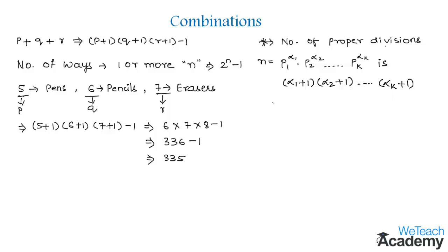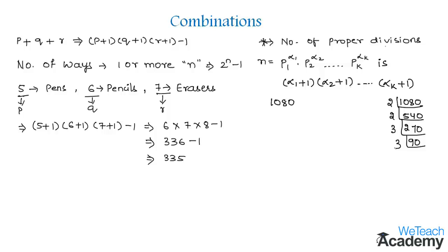Let us find the number of positive divisors of 1080. We perform the prime factorization: 2 times 540 is 1080, 2 times 270 is 540, 2 times 135 is 270, 3 times 45 is 135, 3 times 15 is 45, 3 times 5 is 15, and 5 times 2 is 10. So we get the prime factors as 2 to the power 3, 3 to the power 3, and 5 to the power 1.